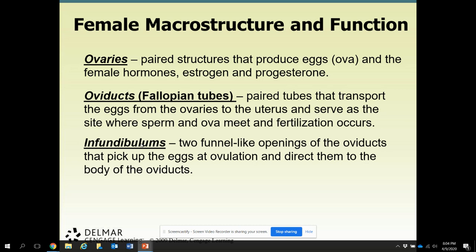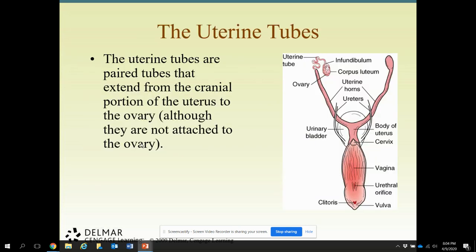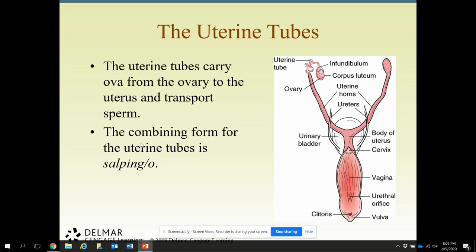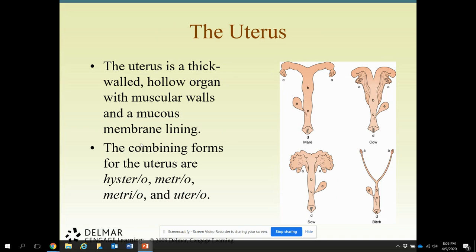The uterine tubes are paired tubes that extend from the cranial portion of the uterus to the ovary — they're not attached to the ovary, they just catch the egg. They carry the ova from the ovary to the uterus and also transport sperm. Here are the differences in species: you have the mare, which is a horse; the cow; the sow, which is the pig; and then the bitch, which is the dog.